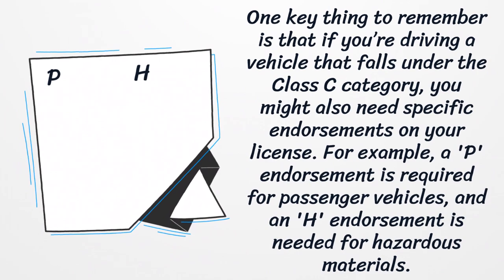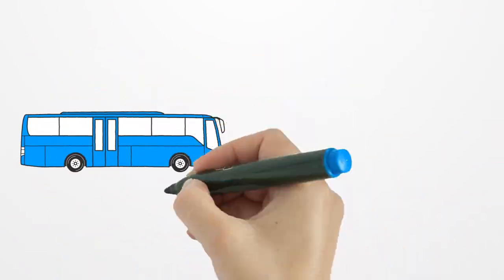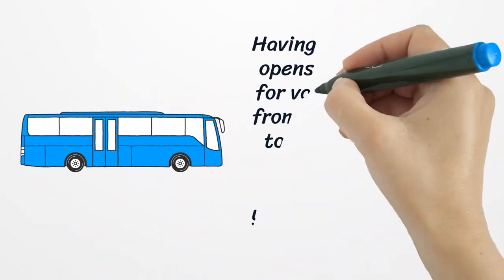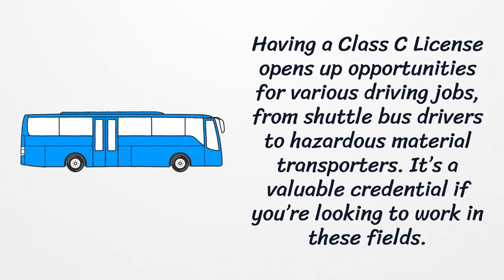One key thing to remember is that if you're driving a vehicle that falls under the class C category, you might also need specific endorsements on your license. For example, a P endorsement is required for passenger vehicles, and an H endorsement is needed for hazardous materials.